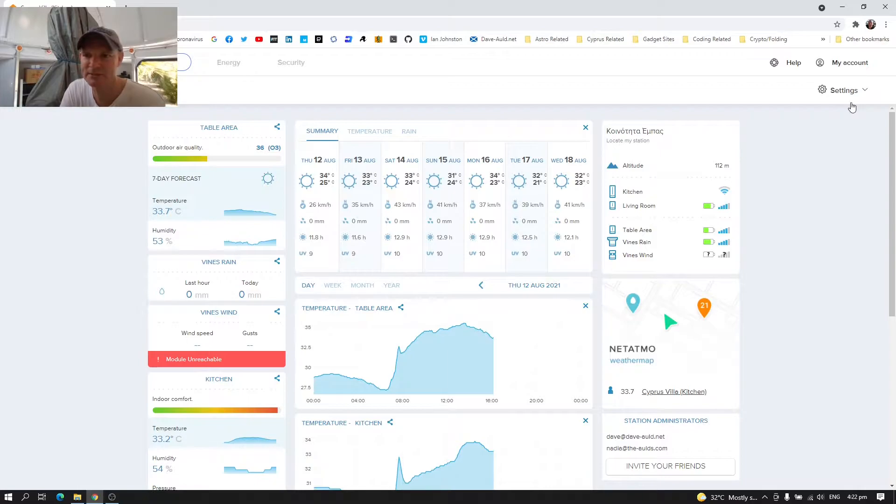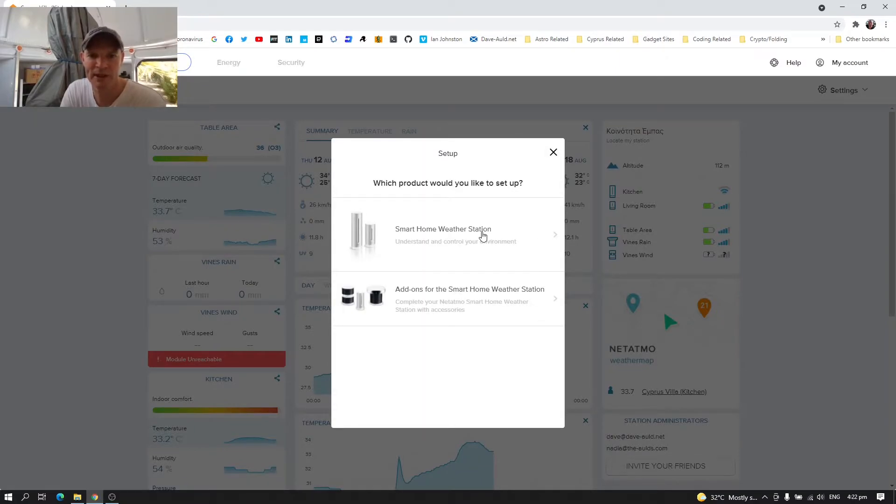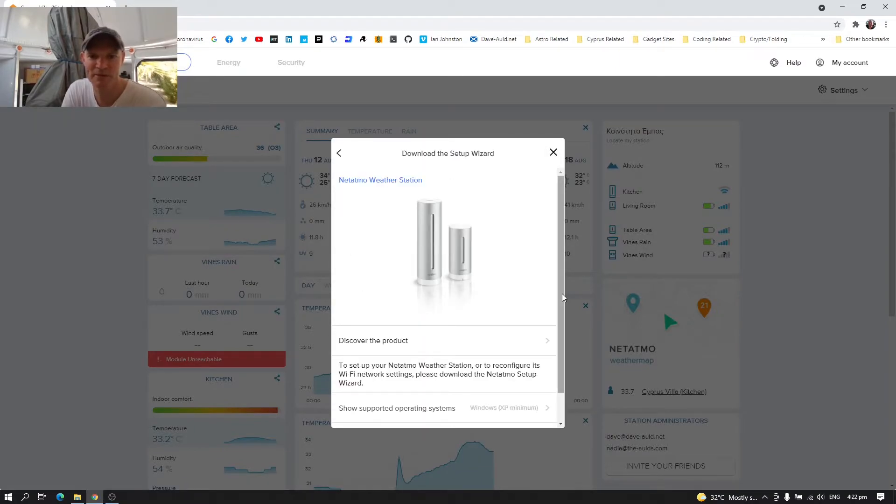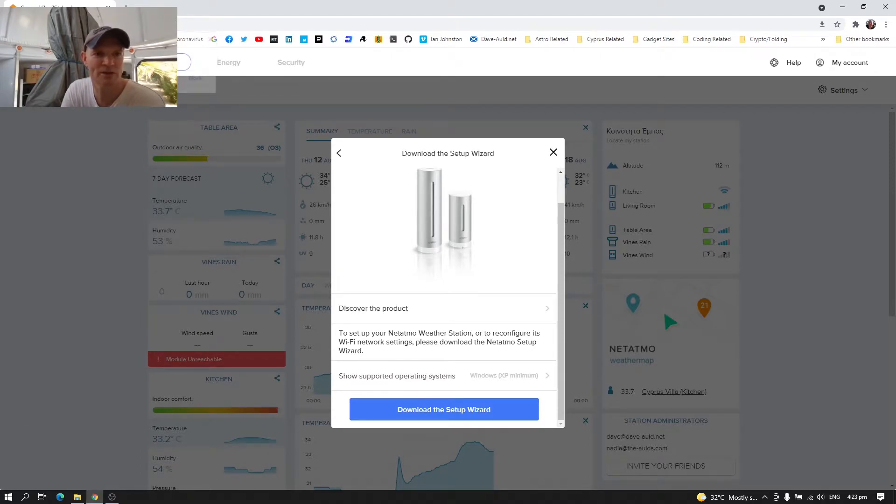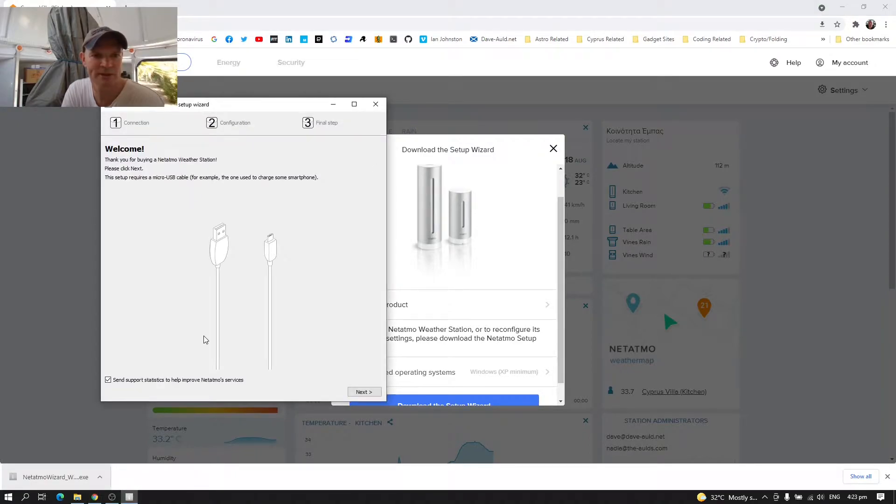Okay, so I'm installing a new weather station. Hover over settings and install new products. And we're going to go with smart home weather station. Now, first thing I'm going to need to do is download the setup wizard. Now, if you do it on your phone, you don't need to do this. You can just do it on the Netatmo app. But since I'm doing it on the laptop, we can do it through here. Okay, so we're just opening up the wizard. There we go.